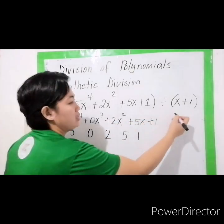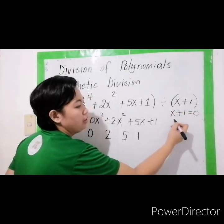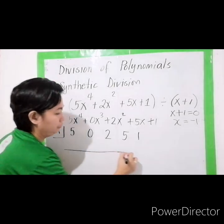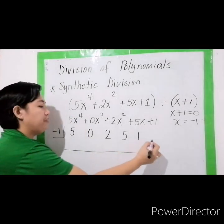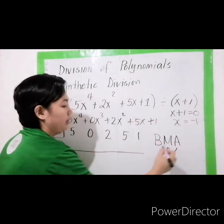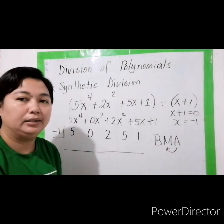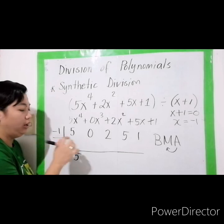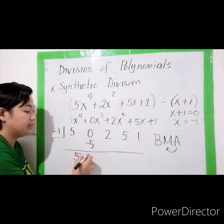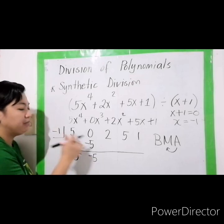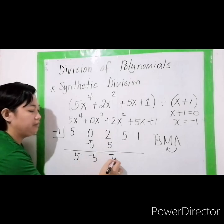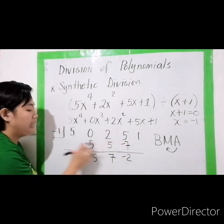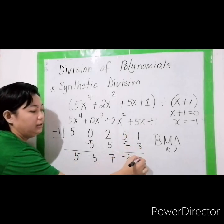Go back to the divisor: x plus 1 equals 0, so x equals negative 1. Place negative 1 as our divisor value. Follow B, M, A — bring down, multiply, and add. Bring down 5. Multiply: 5 times negative 1 is negative 5. Add: 0 plus negative 5 is negative 5. Negative 5 times negative 1 is positive 5. Add: that gives 7. 7 times negative 1 is negative 7. Add: 5 plus negative 7 is negative 2. Negative 2 times negative 1 is positive 3. Then add: you have 4.